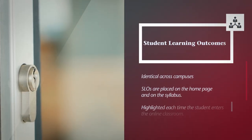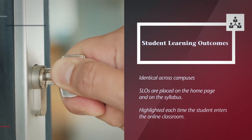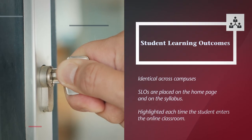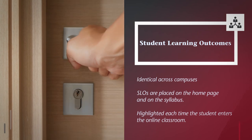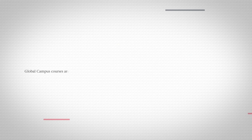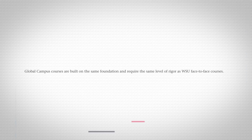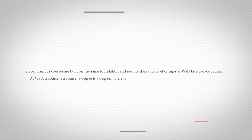Each Global Campus course space includes a front door, which is the home page on which are listed the student learning outcomes, so that they are highlighted each time the student enters the online classroom. Global Campus courses are built on the same foundation of student learning outcomes and require the same level of rigor as WSU face-to-face courses. At WSU, a course is a course, a degree is a degree.